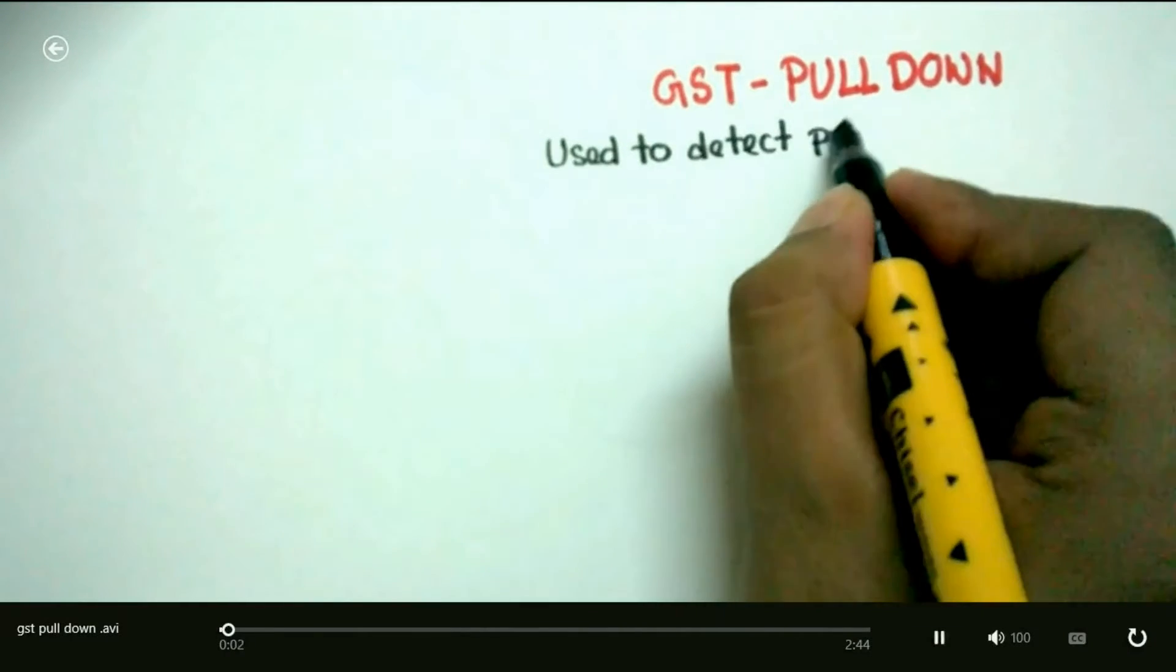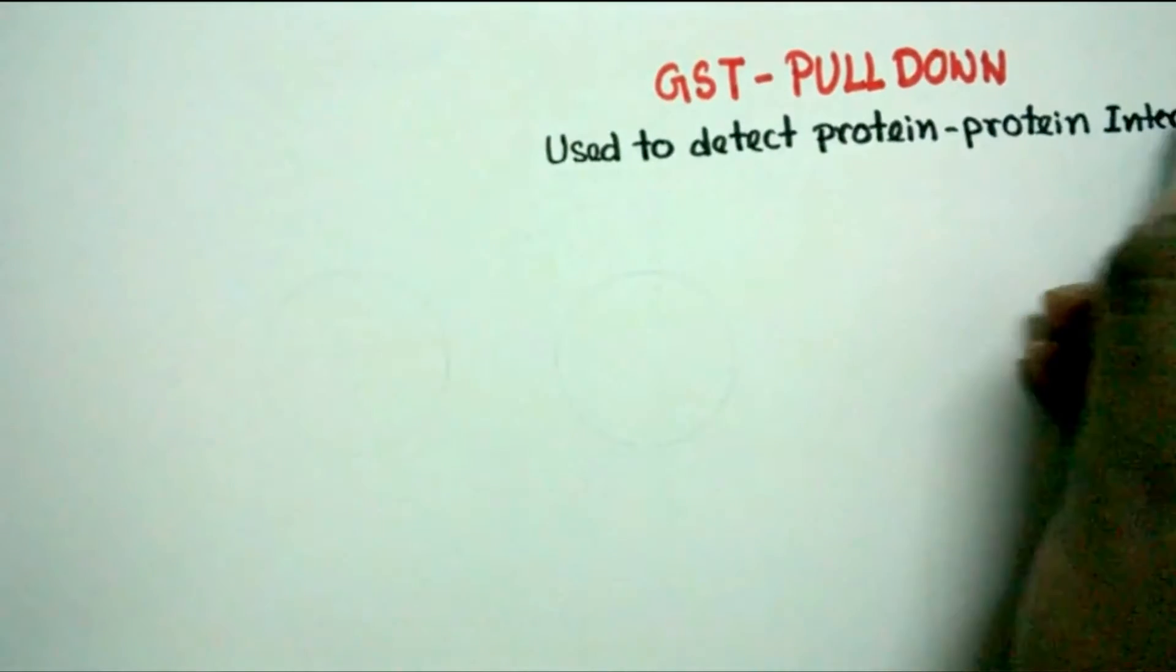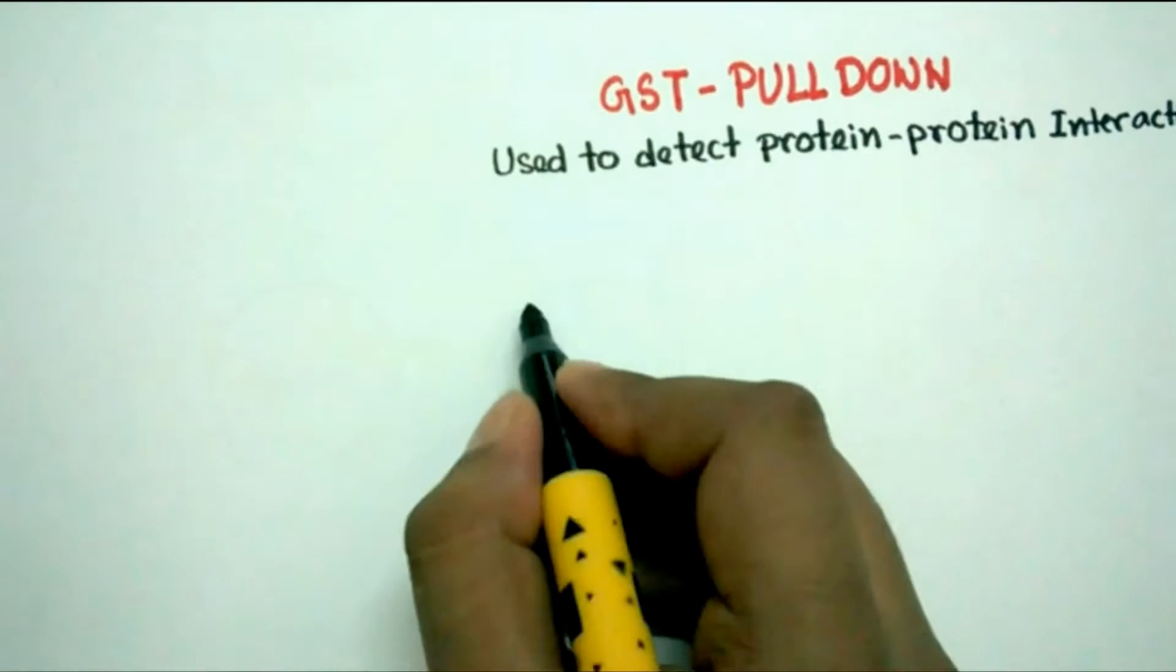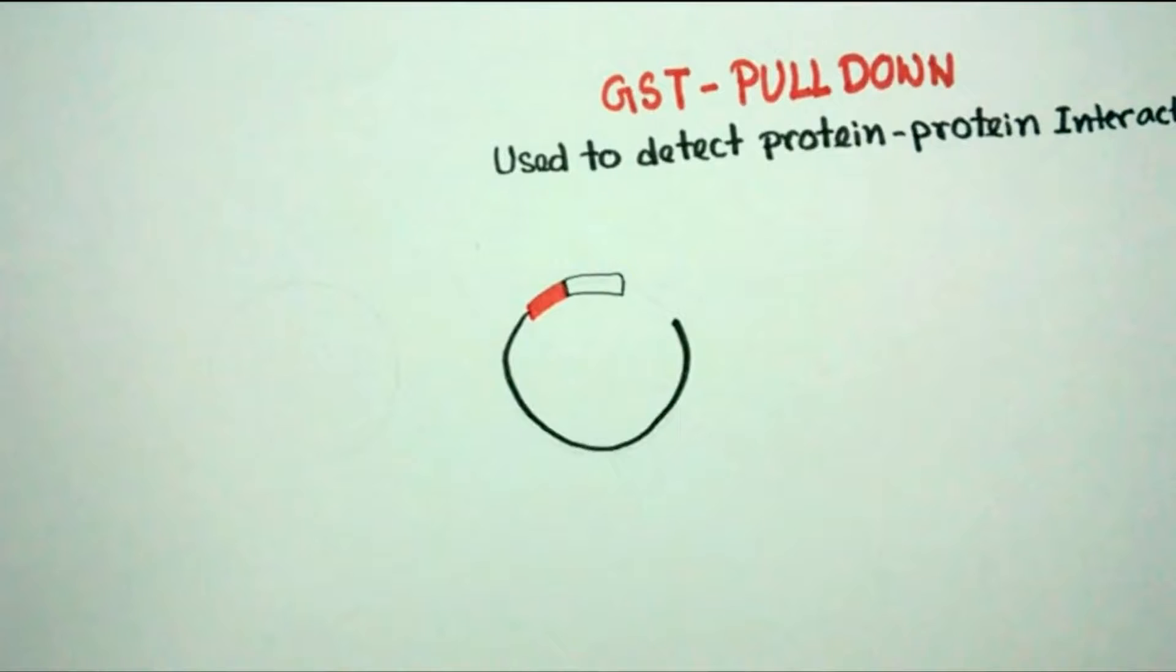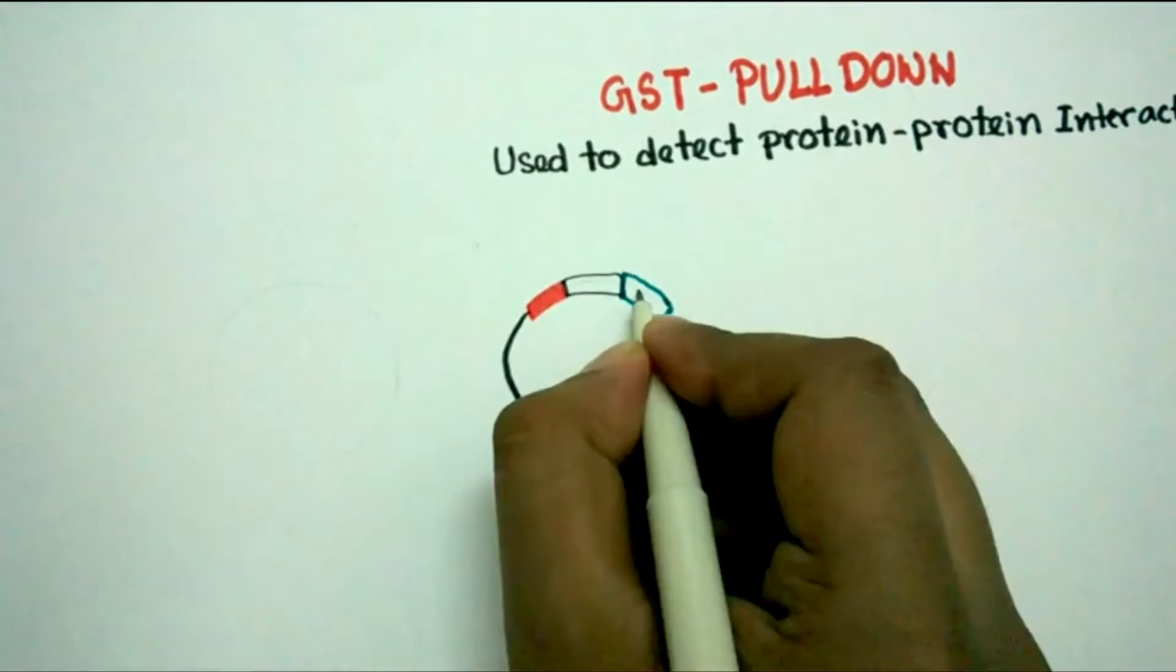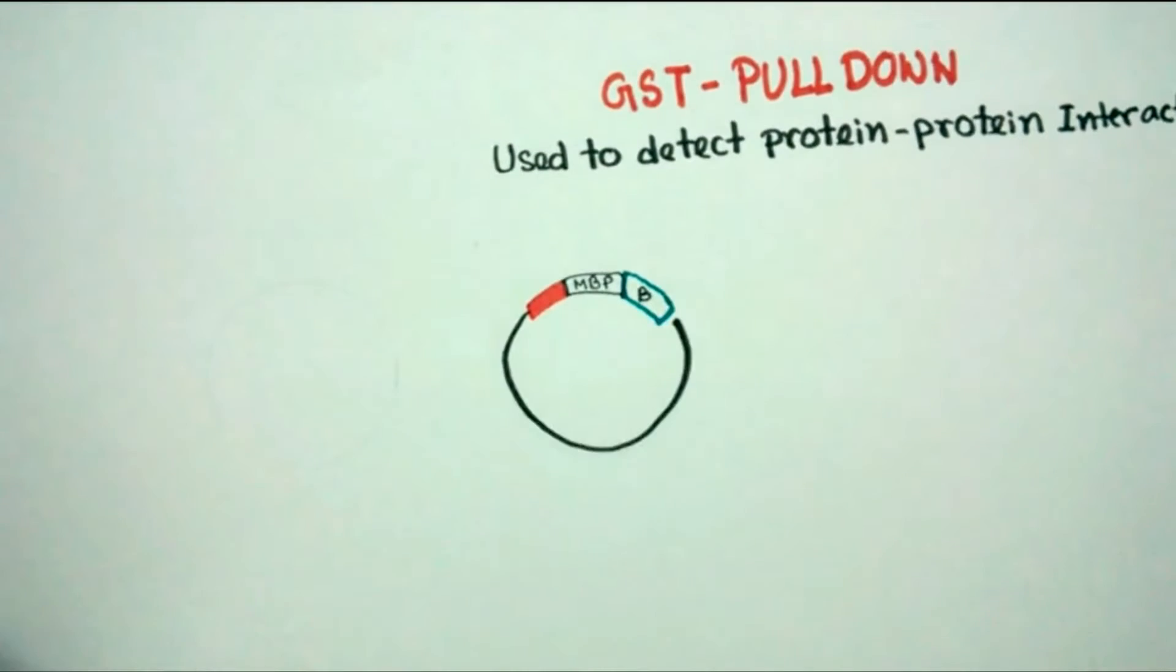GST pulldown is an important technique for identifying protein-protein interaction. We need to use a bacterial expression system, E. coli, and bacterial expression vectors.